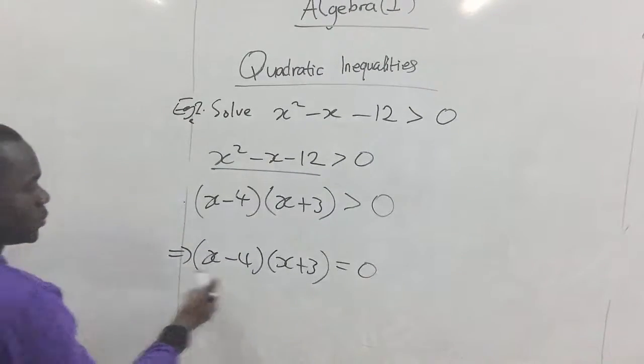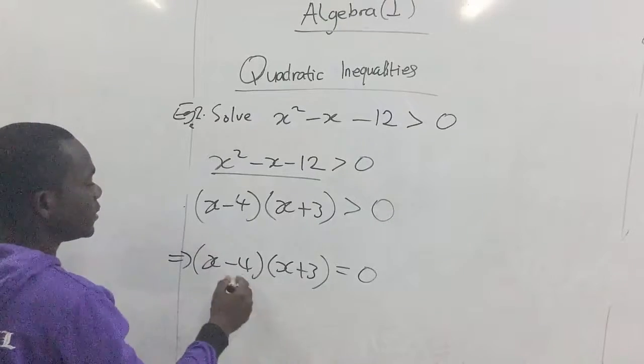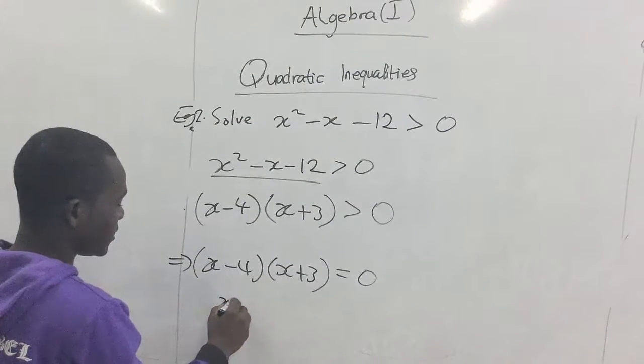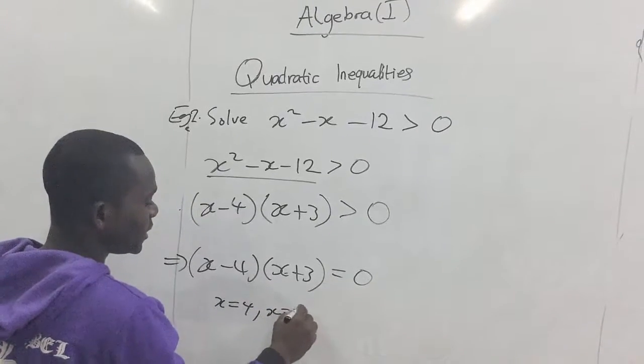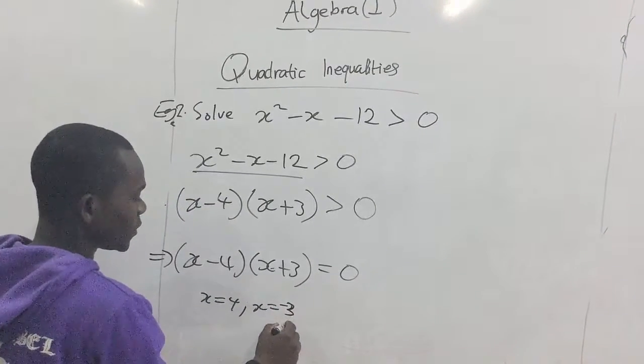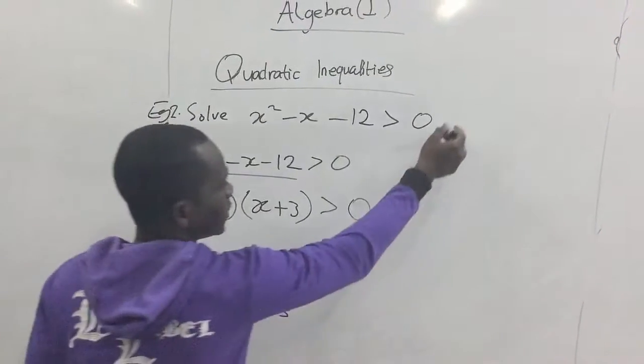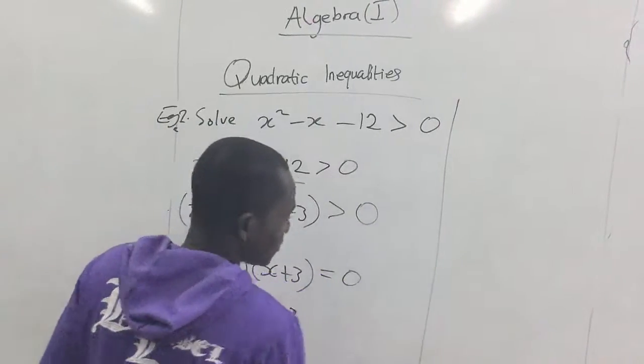So we find the roots. This one gives us x equals four, and this also gives us a root of x equals negative three. Okay, so with this we can sketch our graph.